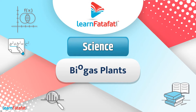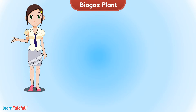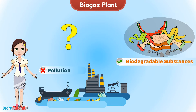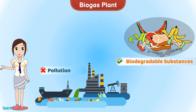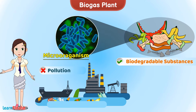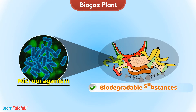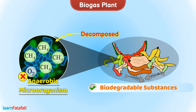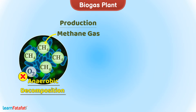Today we will learn about biogas plants. Many times we have heard that in order to reduce pollution we should use biodegradable substances. The biodegradable substances are decomposed by microorganisms and hence do not cause pollution. But when these biodegradable substances are decomposed by anaerobic microorganisms in the absence of oxygen, methane gas is released. That's why this anaerobic decomposition process is used for the production of methane gas by biogas plants.